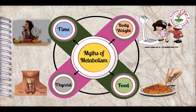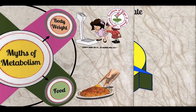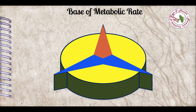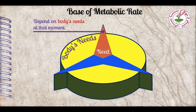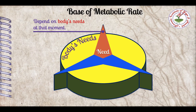Besides the thyroid gland, there are various other factors which also affect the metabolic rate. Now we will be familiar with the real base of metabolic rate. Metabolic rate depends on the body's needs at that moment as per internal circumstances of the body, which is affected by either internal or external factors. When internal or external circumstances change, then bodily needs will change definitely.